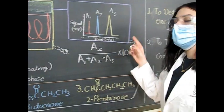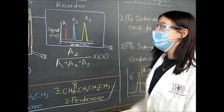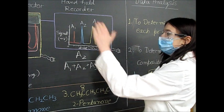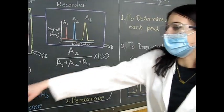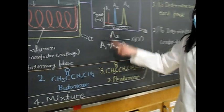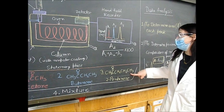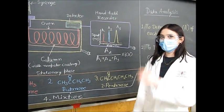So for each of these graphs or each peak you calculate percent recovery. I would calculate three percent recoveries for this specific graph: the percent recovery for the acetone, the percent recovery for the butanone, and the percent recovery for the pentanone. That is the analysis we are doing in this experiment.